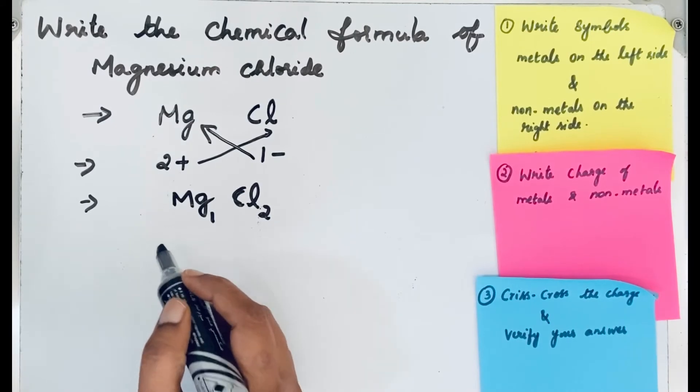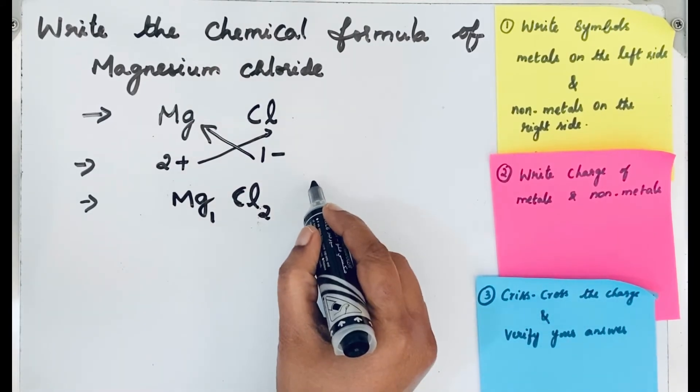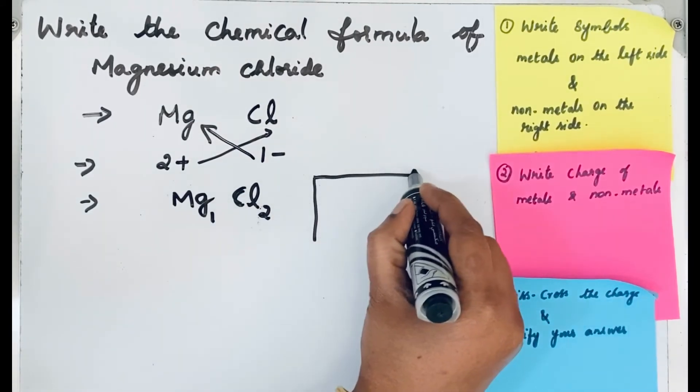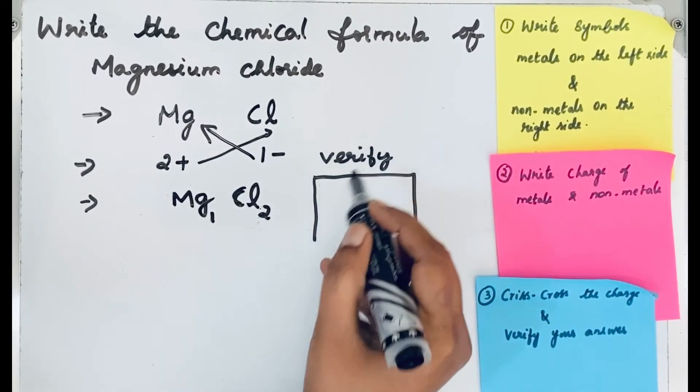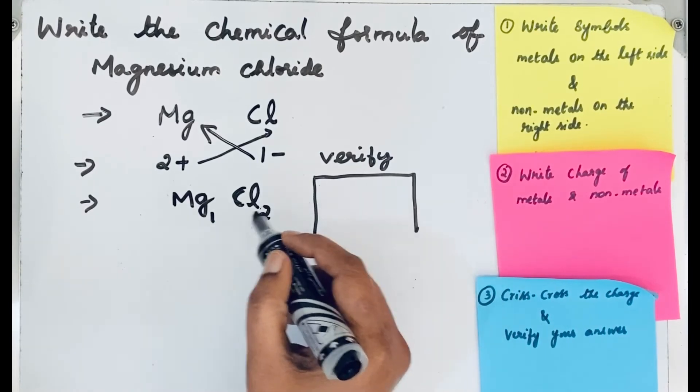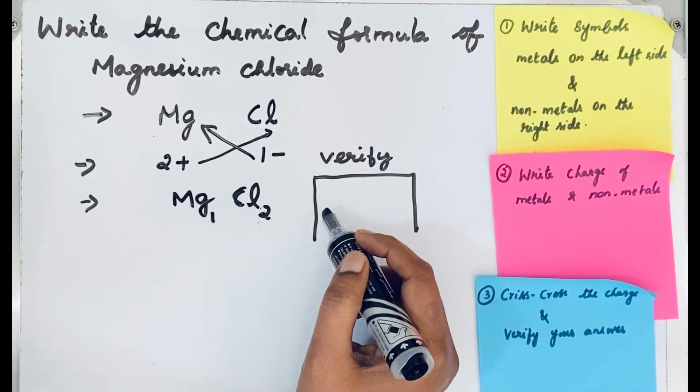After crisscross, now we verify the answer. How can we verify the answer? Once the ions are combined together, they form a neutral compound. Let's check that. In neutral compounds, the charges are balanced.